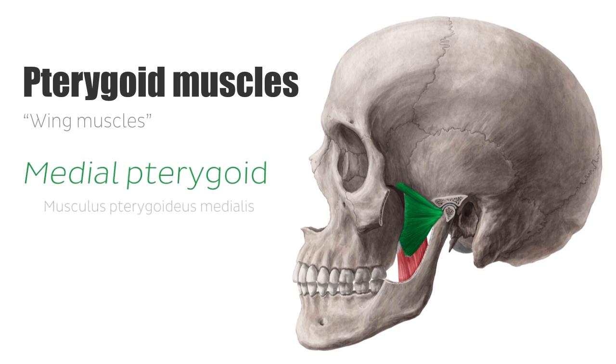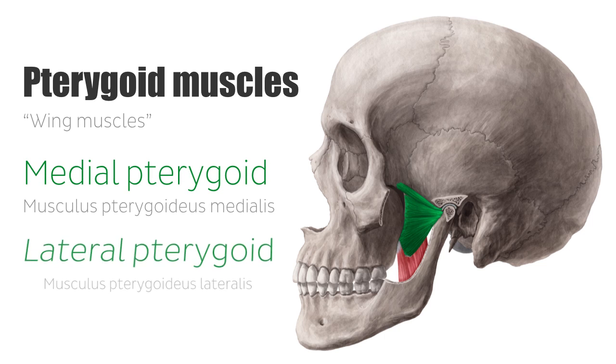One is called the medial pterygoid, and the other is the lateral pterygoid, which you see highlighted in green, and will be our topic of discussion.